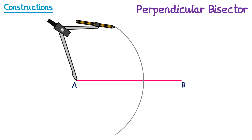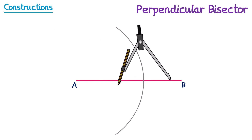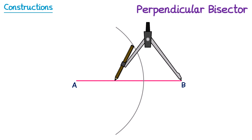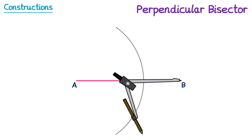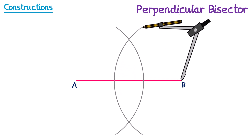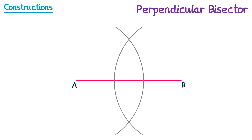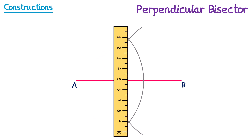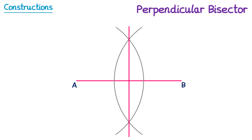We then take the pair of compasses and switch the point to point B, but crucially again, we do not change the width of the pair of compasses. We draw ourselves a similar arc starting below the line, going through and ending above the line like this. If we then take a ruler and connect together the two points where these arcs intersect, we will have formed a perpendicular bisector, splitting line segment AB into two equal size smaller line segments with a line that crosses at 90 degrees.